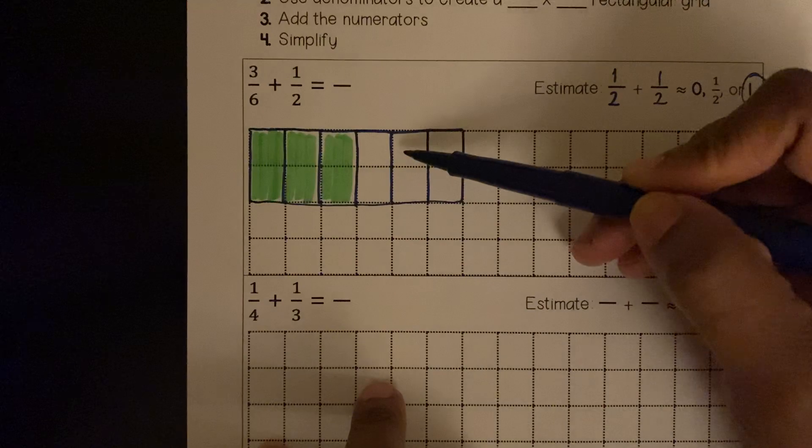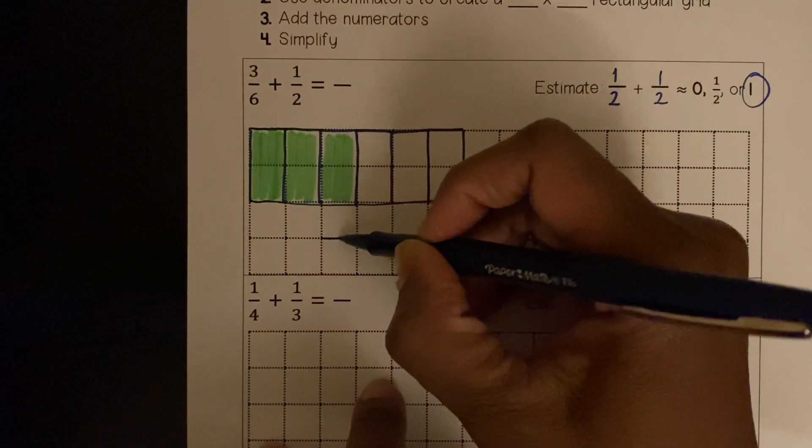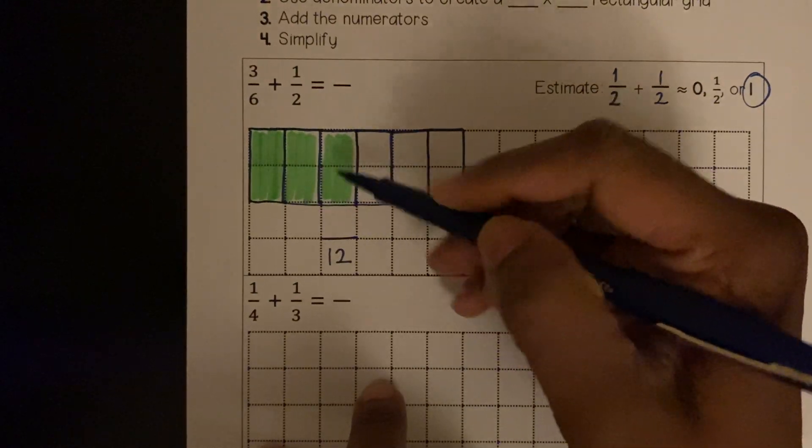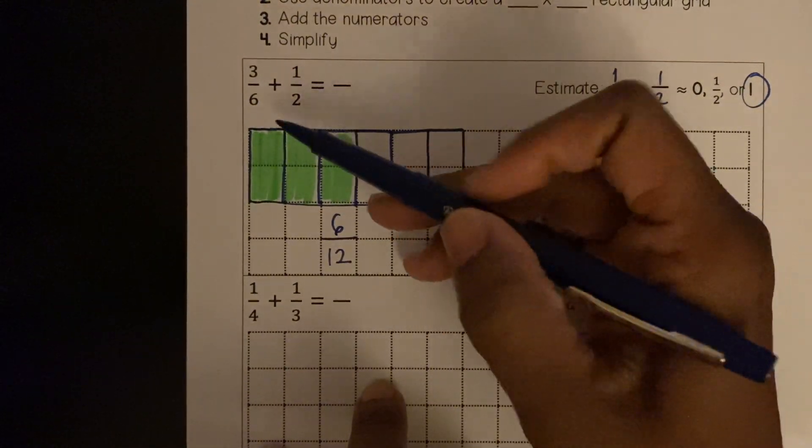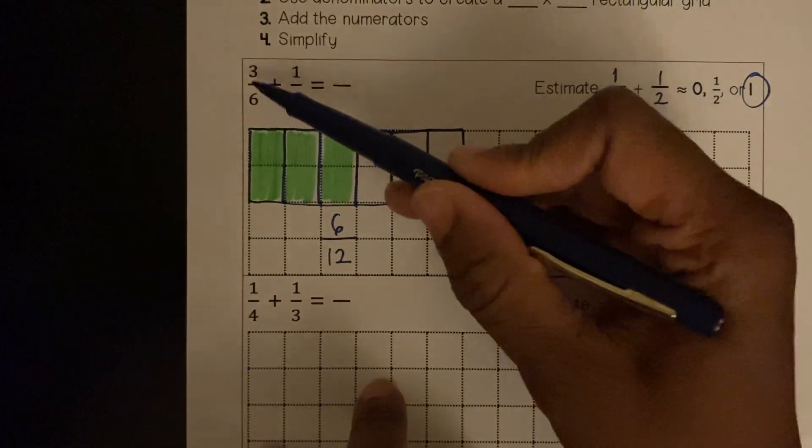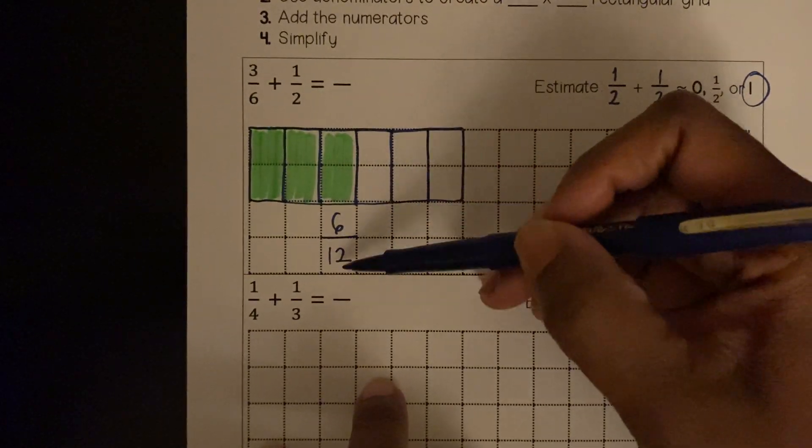Two, four, six, eight, ten, twelve. Twelve: two, four, six. So an equivalent fraction to 3/6 is 6/12, which makes sense because 3 is half of 6 and 6 is half of 12.